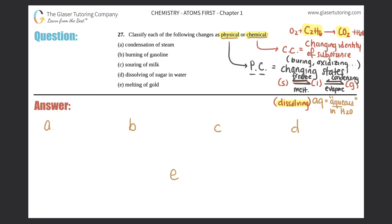So let's start. We got letter a: condensation of steam. There's that word condensation, condensing. That's a phase change, that's going from a gas back to a liquid. So this is a physical change.